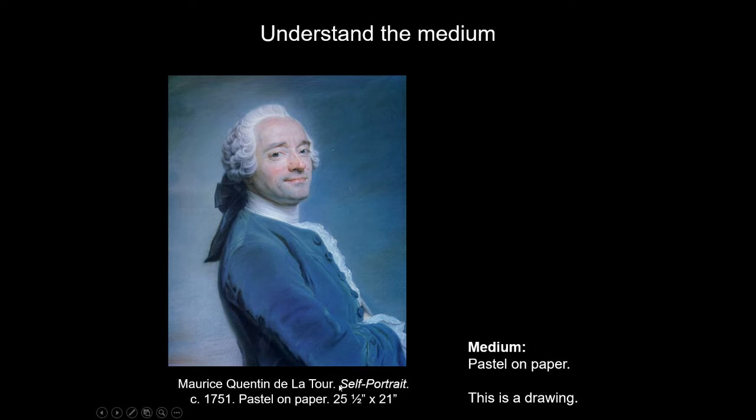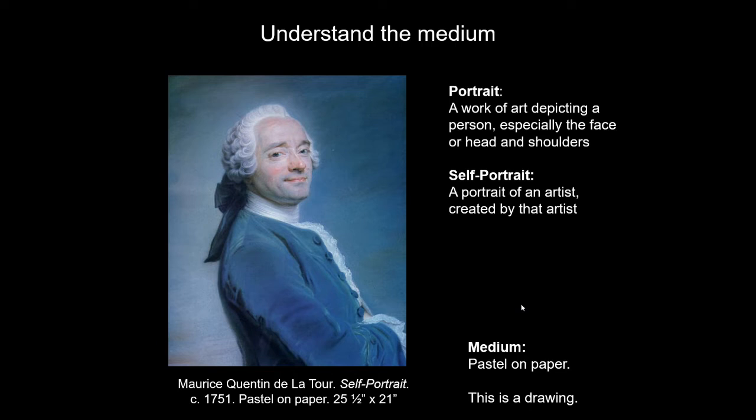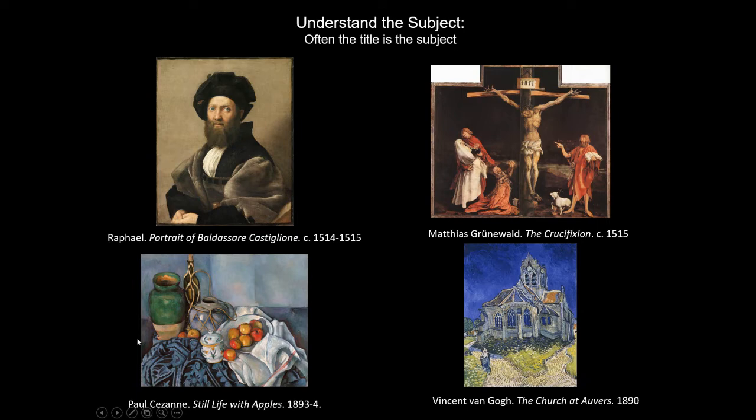What's the subject of this piece? It says Self-Portrait. A portrait is a work of art that depicts a person. A self-portrait means it is a portrait of the artist made by that artist. So who is this man in the drawing? It's the artist, Maurice Quentin de La Tour, because this is a self-portrait.